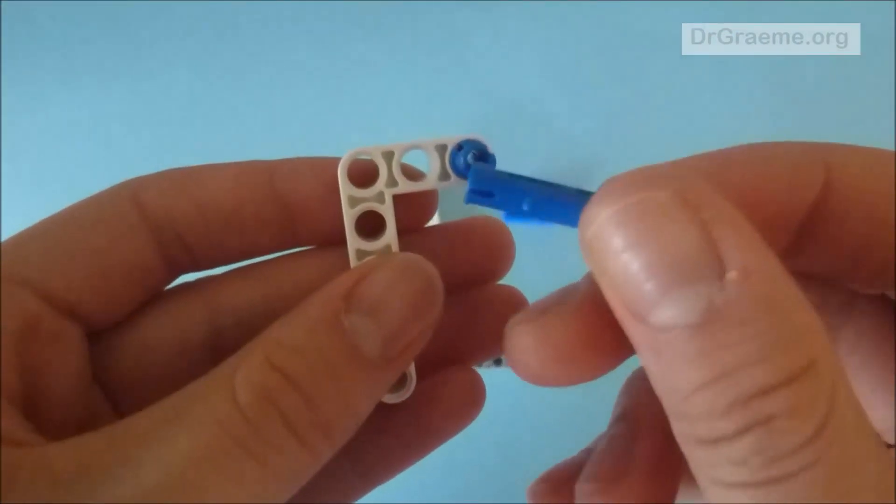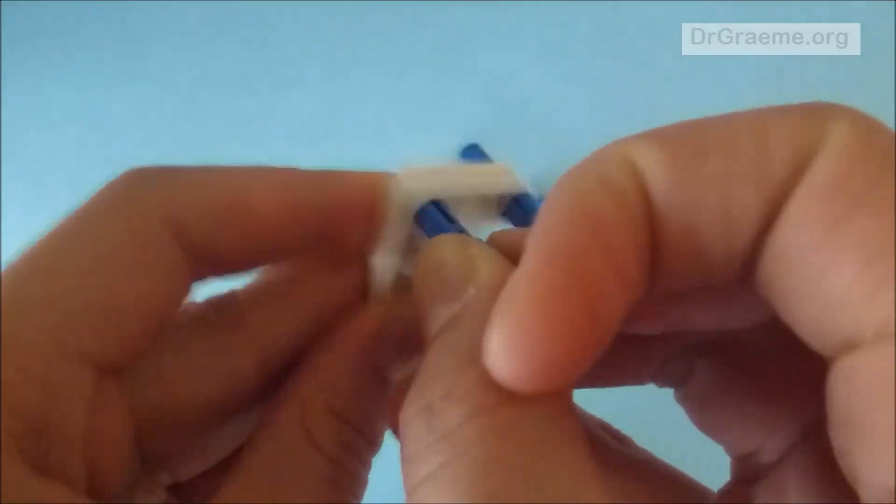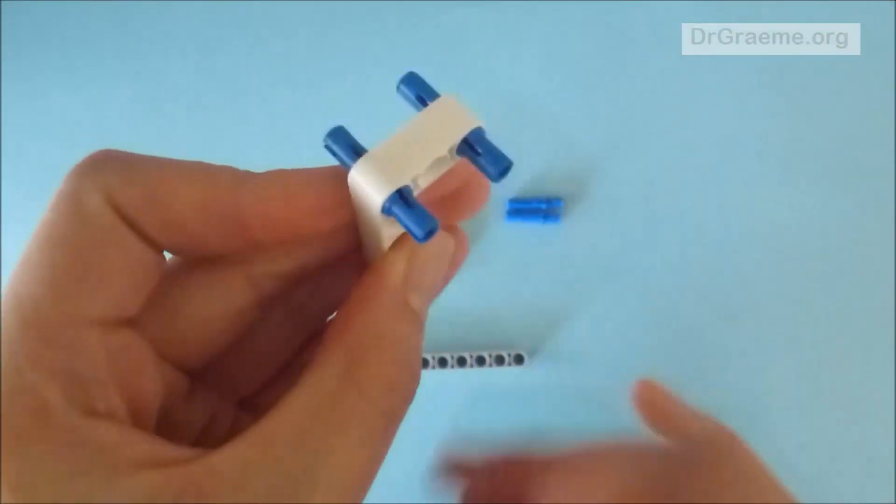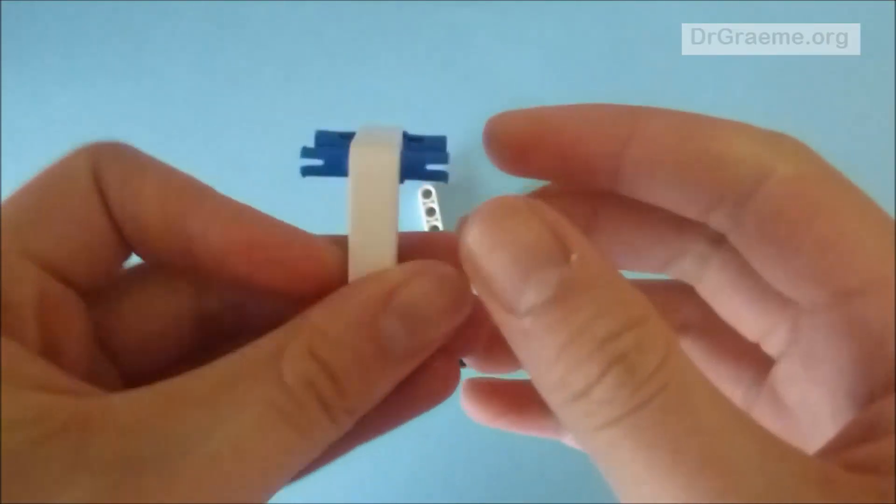And then we will do the same with the corner hole, shown here. Again, so that they are of equal length on either side. So it should look like that.